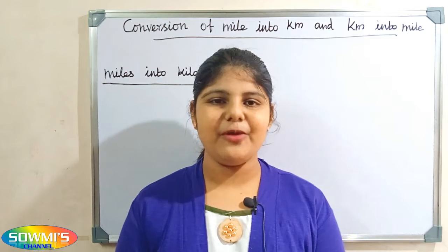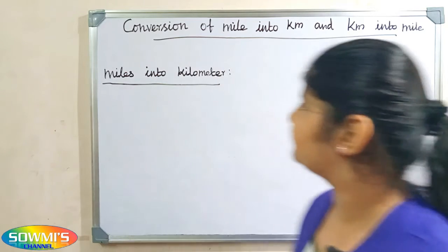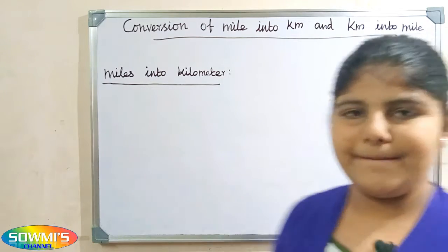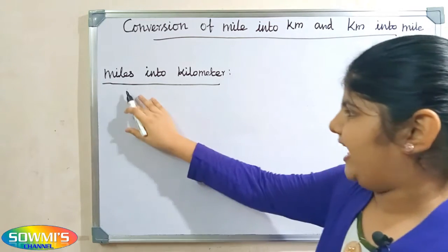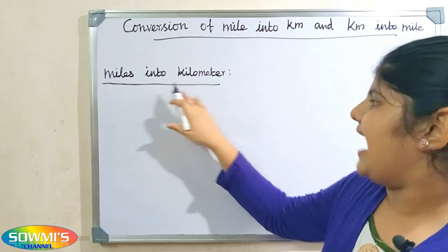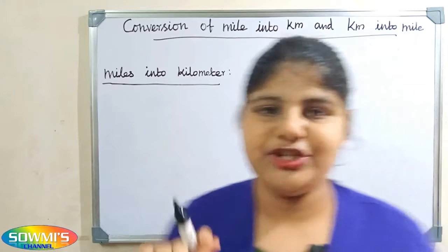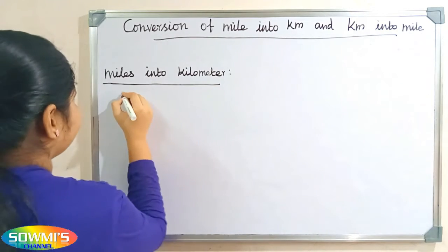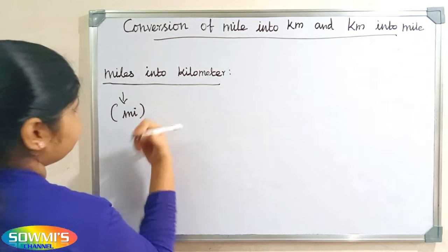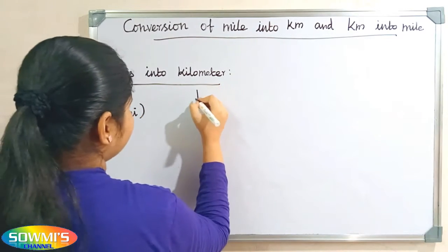Hi friends, welcome to Sawmish channel. In this video I am going to teach how to convert miles into kilometers and kilometers into miles. Miles is the imperial system of length unit and kilometer is the metric system of length unit. The short form of miles is 'mi' and the short form of kilometer is 'km'.